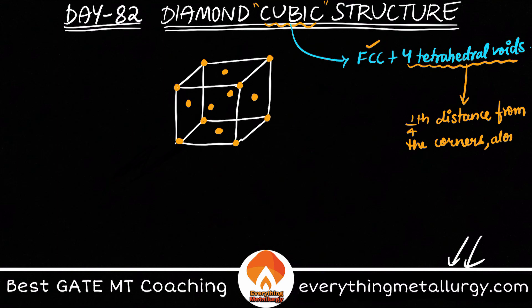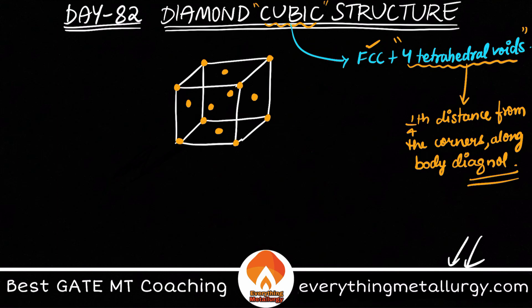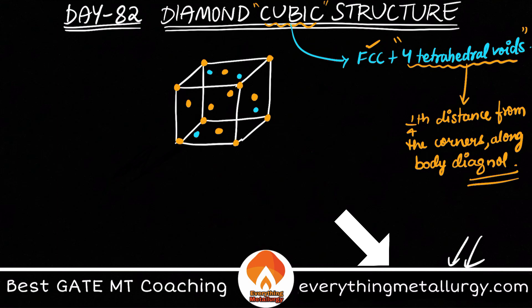Along your body diagonal, we have 8 tetrahedral void coordinates. But we are saying only 4 tetrahedral voids are filled — half of those present in your FCC. This is the same case with the zinc blende structure. So, 2 voids over here and the other 2 over here — these 4 atoms are occupying the tetrahedral voids along my body diagonal.